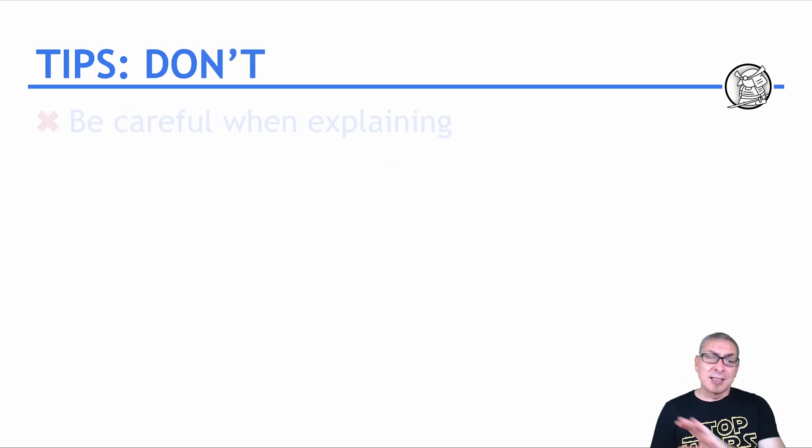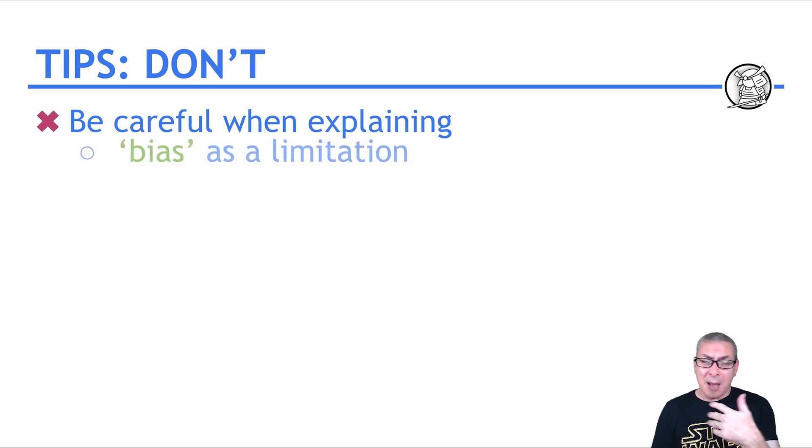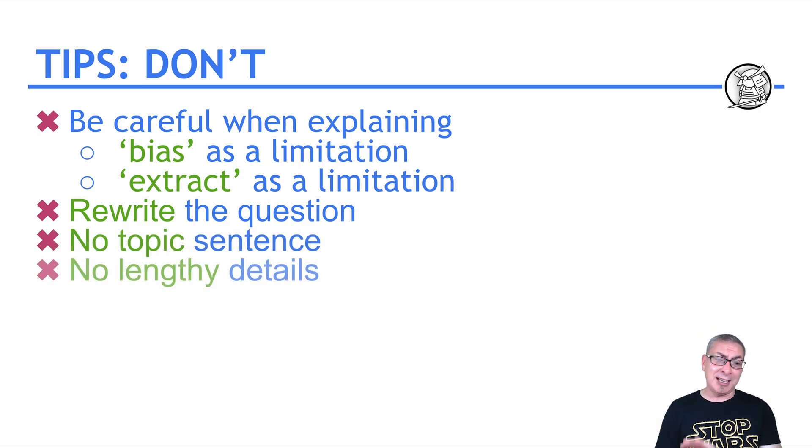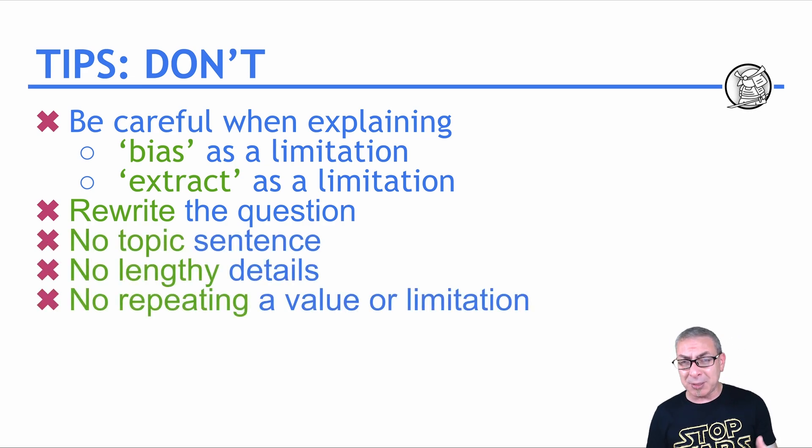Here are things to be careful of. Be careful if you explain bias as a limitation. You better give a good explanation, because most sources could be biased. And the source you're going to use is always an extract as a limitation. So you better give good detail as to why it is. I recommend against using extract as a limitation. Don't rewrite the question. You waste time. Don't write a topic sentence. You waste time. Don't write lengthy details. You waste time. Don't repeat a value or limitation because you won't get credit for it. And you waste time.